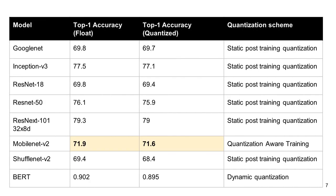This slide shows the accuracy for the floating-point parameters and the quantized parameters. All of them show slight degradation in accuracy. Most of them use static quantization. One uses quantization-aware training. One uses dynamic quantization. It is noticeable that MobileNet V2 uses quantization-aware training and the accuracy still drops a little.